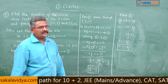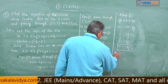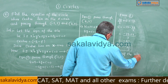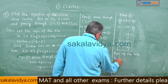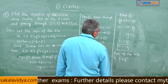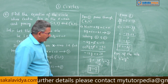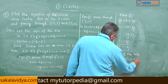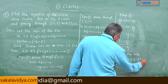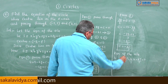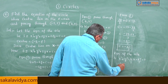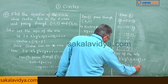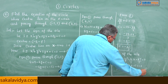Now, the equation of the circle: substituting g equals minus 7 by 3 and c equals minus 67 by 3, we get x squared plus y squared minus 14 by 3 x minus 67 by 3 equals 0. Multiplying through by 3, the final answer is 3x squared plus 3y squared minus 14x minus 67 equals 0.